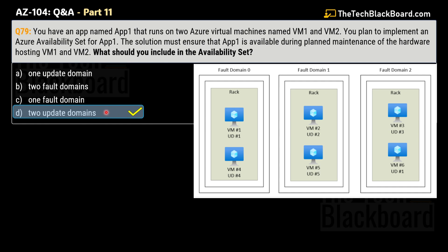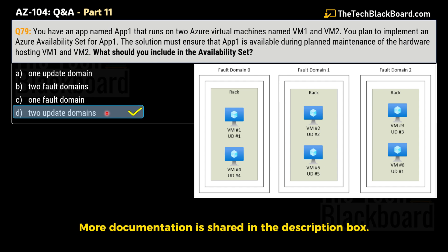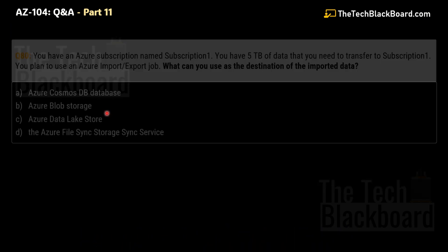The goal is to implement an Azure availability set for App1 to ensure the application remains available during planned maintenance of the hardware hosting VM1 and VM2. When you create an availability set, the hardware in a location is divided into multiple update domains and fault domains. An update domain is a group of virtual machines and underlying physical hardware that can be rebooted at the same time. Virtual machines in the same fault domain share common storage, power source, and network switch. During scheduled maintenance, only one update domain is updated at any given point of time, and update domains are not necessarily updated sequentially. That's why we need two update domains.